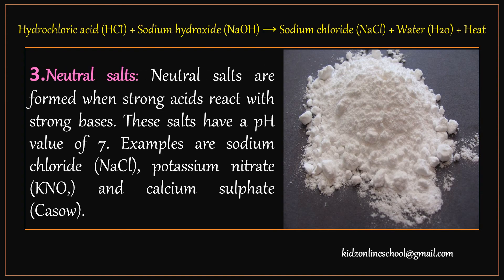Neutral salts are formed when strong acids react with strong bases. These salts have a pH value of 7. Examples are sodium chloride, potassium nitrate, and calcium sulfate.